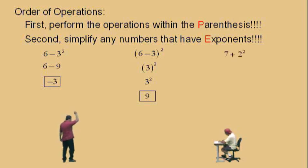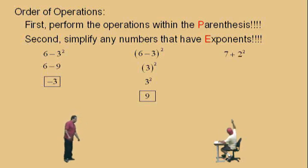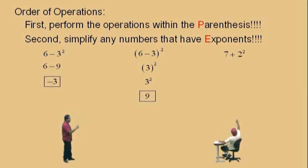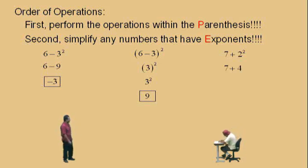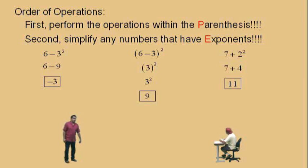7 plus 2 squared. Here's another problem. Exponents first. What's 2 squared, Charlie? Four. That's 4. 7 plus 4 is 11. There's our answer.